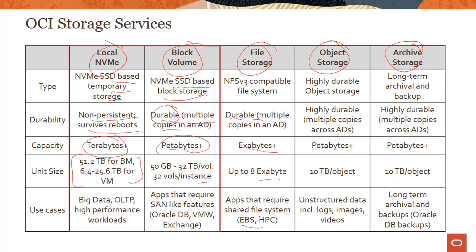The last two storage services — object storage and archive storage — can be thought of as storage for the web. If you have a lot of unstructured data, you store it in object storage, which is highly durable with multiple copies maintained across data centers in a multi-AD region, with capacity in petabytes. Archive storage is a class within object storage suited for long-term archival and backup — highly durable, for applications with long-term archival and backup needs.